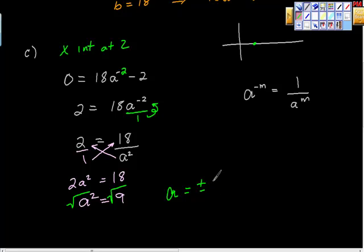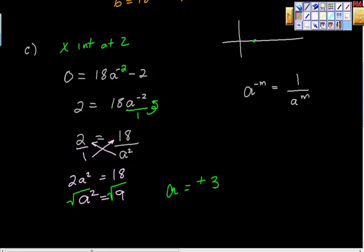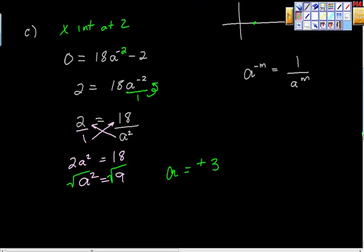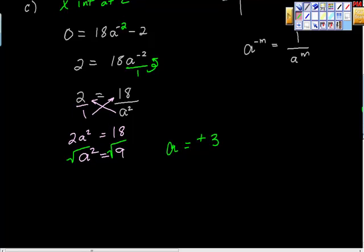Remember that a cannot equal a negative number, because taking an even root of a negative number creates problems. So this a value cannot be negative. Therefore a must equal 3. And finally our equation is f(x) = 18 times 3 to the negative x, minus 2.